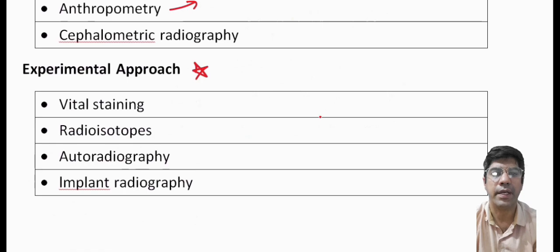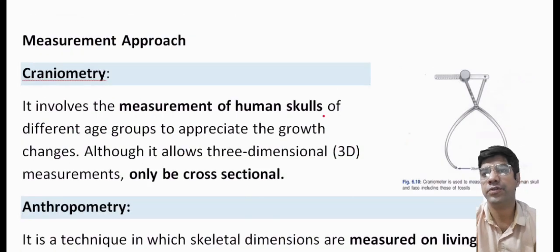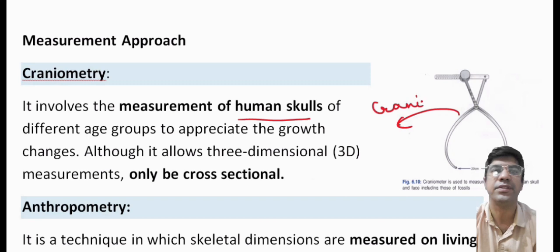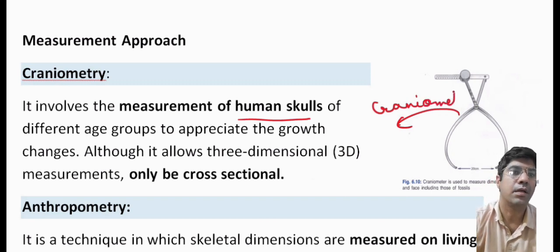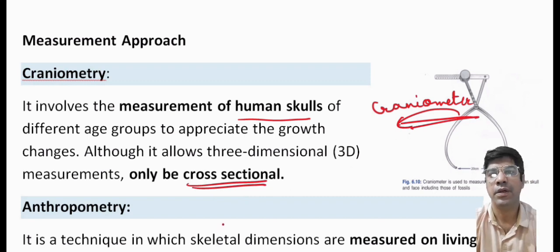Craniometry involves the measurement of the human skull. A craniometer is the instrument used to measure the dimensions of the human skull and face, including those of fossils. We can measure the diameter and dimensions of the human skull through the craniometer.